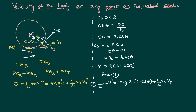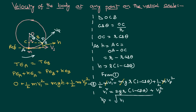Half M V1 squared equals MgR(1 minus cos theta) plus half M Vp squared. Cancelling the common mass M and multiplying through by 2 gives V1 squared equals 2GR(1 minus cos theta) plus Vp squared. Therefore the velocity at point P is the square root of V1 squared minus 2GR(1 minus cos theta). This formula gives the velocity at any point of the circular motion.